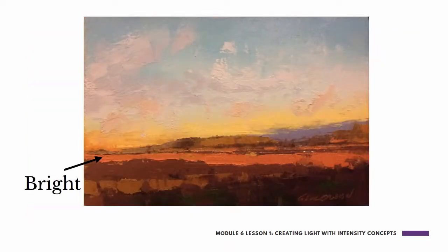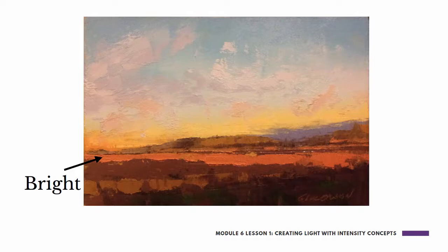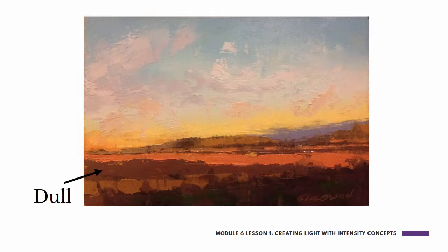You can also see that contrast in this painting of almost that same time of year — late fall — as the afternoon sun falls across these open cotton fields that have been cut and the cotton already collected. Where the light is hitting, you see very, very bright, intense colors — a bright orange. Where the field is in shadow, you see a very dull, almost brick-red color. So your sense of illumination is coming from the contrast of bright to dull.